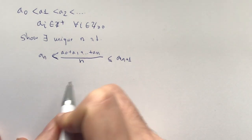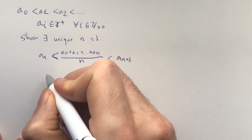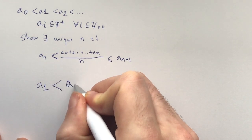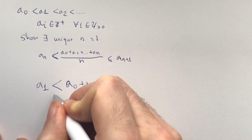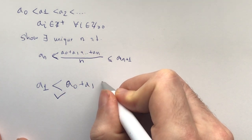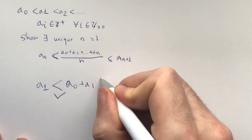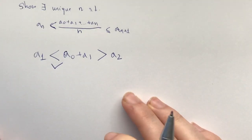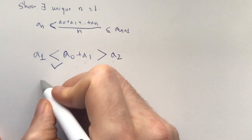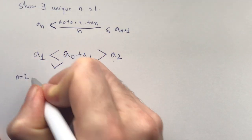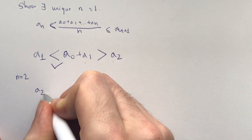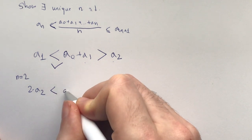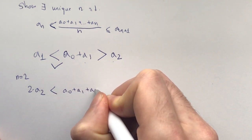Say, what if this thing is false for n=1? a_1 would have to be less than a_0 plus a_1 — this part is true — but if the whole problem isn't true, then this would have to be greater than a_2. So we would have a_0 plus a_1 is greater than a_2. Then for n equals 2, we would have 2 times a_2 would need to be less than a_0 plus a_1 plus a_2.